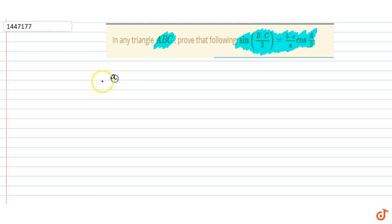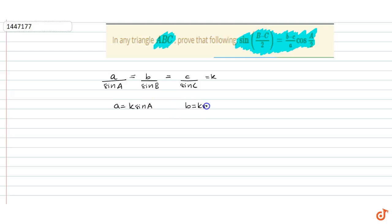By the sine rule, a/sin A = b/sin B = c/sin C. If we let this common ratio equal k, then a = k·sin A, b = k·sin B, and c = k·sin C.